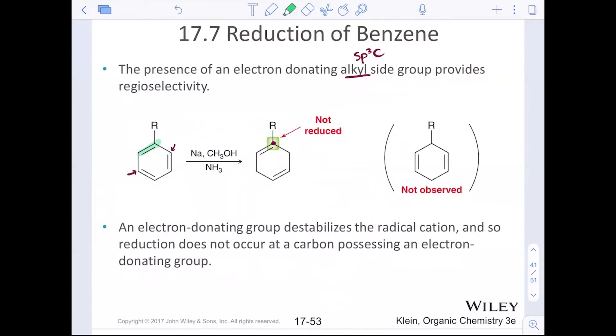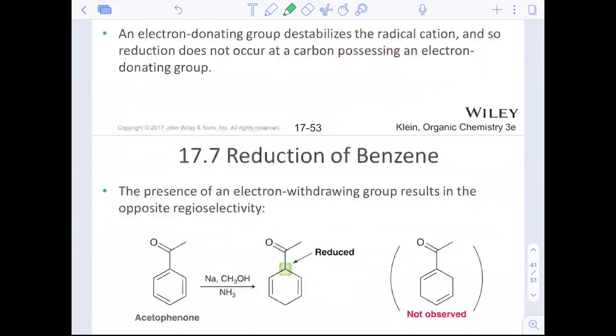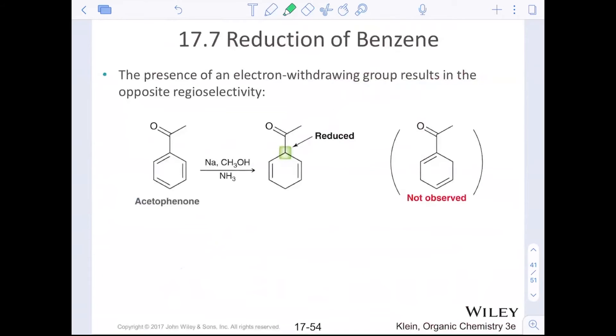The presence of an electron withdrawing group, on the other hand, does the exact opposite. The electron withdrawing group pulls the electron density away from the benzene ring and so therefore it's making that position and that pi bond more reactive so that one will get reduced. Do you get my drift? You'll reduce this guy and then the opposite, that guy.